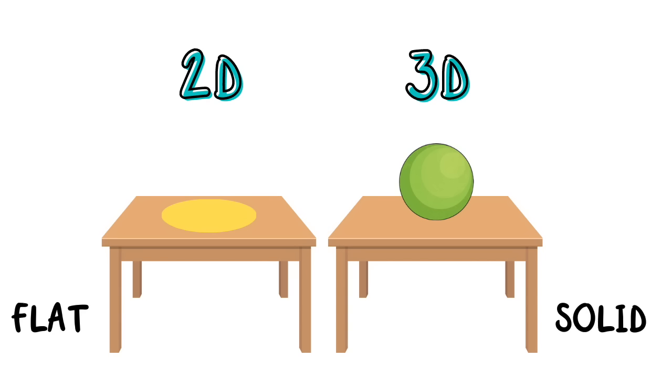For example, if you place a 2D shape on a table, it will lie flat on the surface. If you place a 3D shape on a table, it might roll or stand upright.